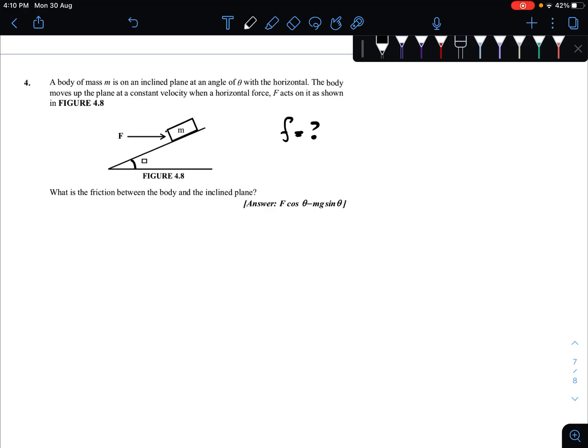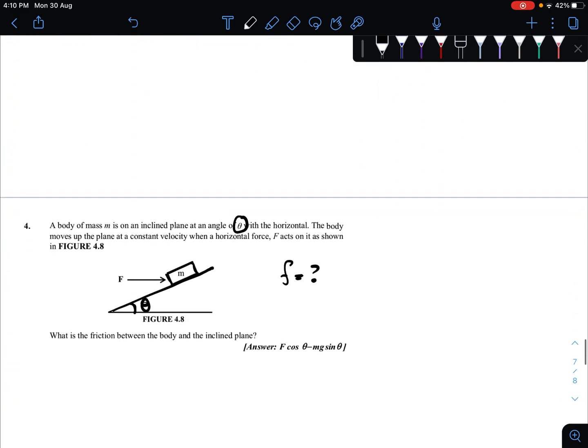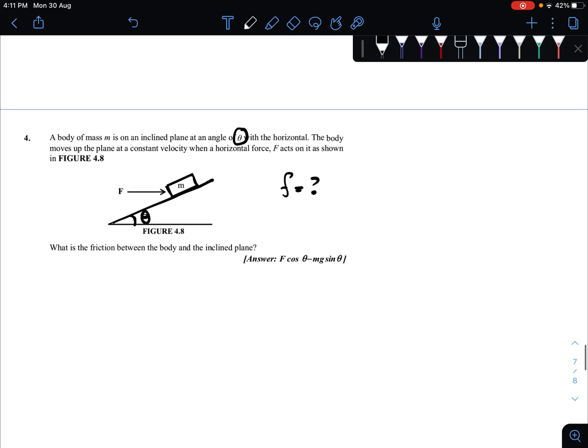Let us understand what we have here. We have our object located on an inclined plane which is at angle theta with the horizontal. So the theta here is actually given as theta. The body moves up the plane at a constant velocity. It is going to move up here. This is the direction of the velocity. When a horizontal force F is acted as shown, we are going to push it like this.